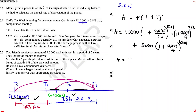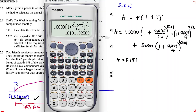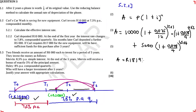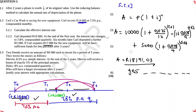Calculating that gives approximately 18,191.03 rand. So the answer is yes — Karl will be able to afford the equipment. He only needs 17,000 rand, but after three years the investment grows to approximately 18,191 rand.